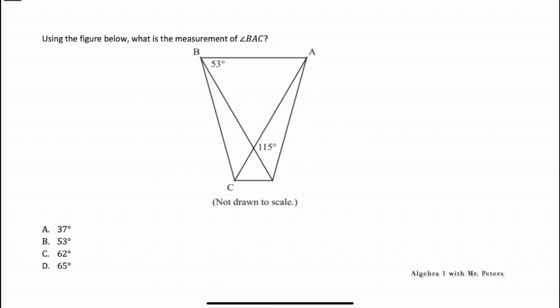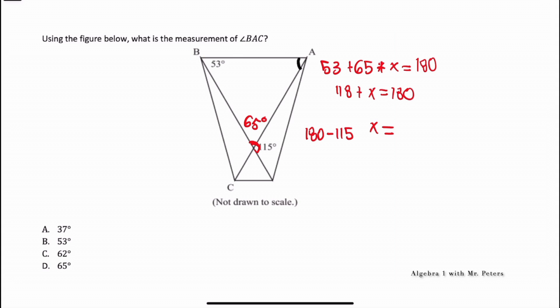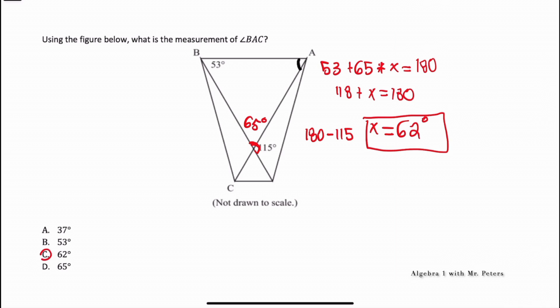They're asking for angle BAC. Since 115 degrees and the adjacent angle form a straight line equaling 180 degrees, that angle is 180 - 115 = 65 degrees. Now we have 53 + 65 + X = 180. Combining: 118 + X = 180, so X = 62 degrees. The answer is C.